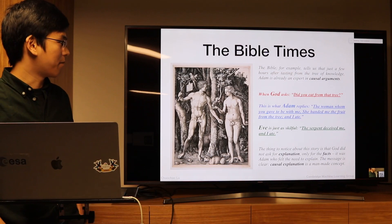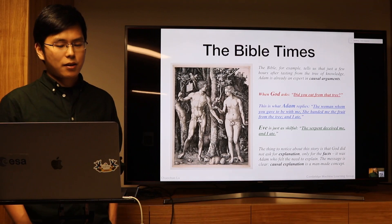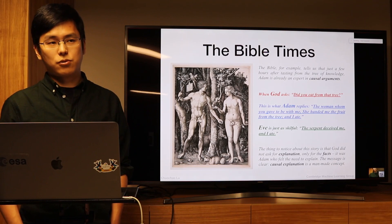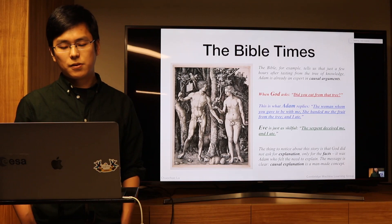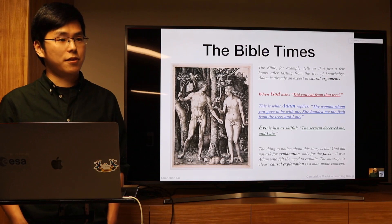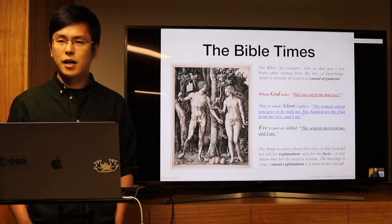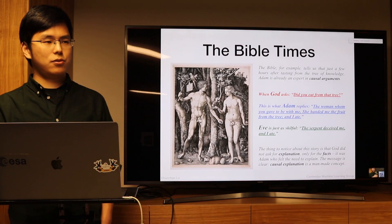In Judea Pearl's book, causality is dated back to biblical times. He quotes stories from the Bible: when God asks 'Did you eat from that tree?', Adam replies 'The woman whom you gave to be with me handed the fruit from the tree and I ate.' Adam and Eve try to explain something to avoid punishment — this causal concept has long human history.